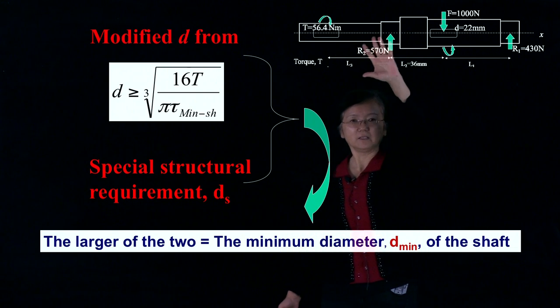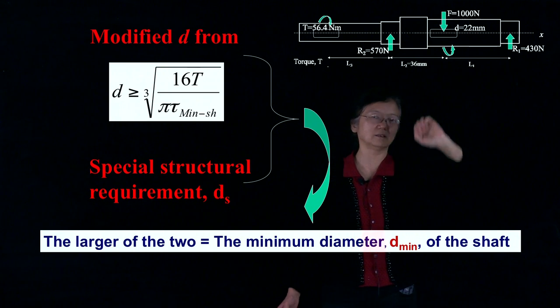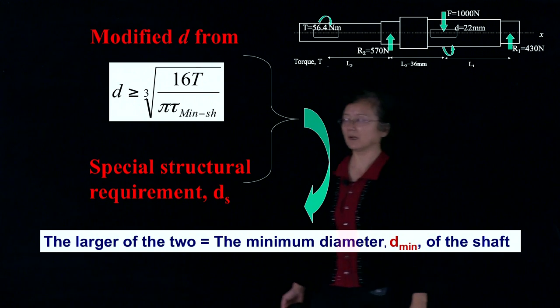The larger of those two has to be our minimum diameter for this shaft. So once we know that, we can go to design the shoulders of each places and then complete the shaft design, which is a thing we're going to do in class. See you in class.